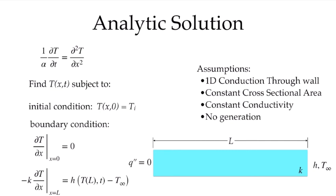We're looking for an analytic solution. The heat conduction equation in one dimension in Cartesian coordinates with constant conductivity gives us: one over the thermal diffusivity times the time derivative of temperature equals the second derivative of temperature with respect to x. Because it's an unsteady problem, we need an initial condition — the bar for all x at time zero has a constant initial temperature Ti. The boundary condition at x equals zero is that heat flux is zero, meaning the temperature gradient is zero.